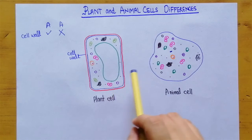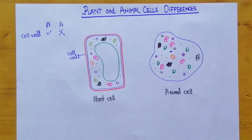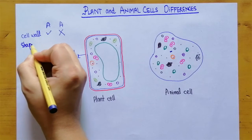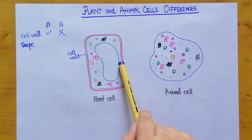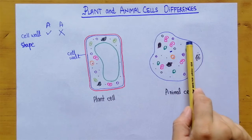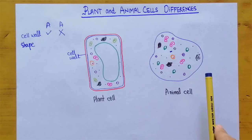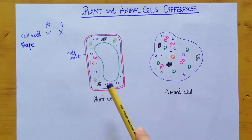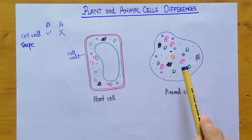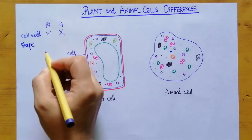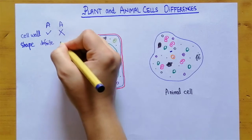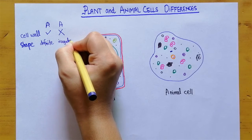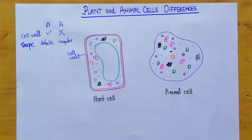Another very important difference is the shape. The plant cell has a very defined or definite shape, while in the case of the animal cell it is somewhat irregular in shape. So this is another difference we can use to identify which type of cell is which — plant cells have a definite shape while animal cells have an irregular shape.